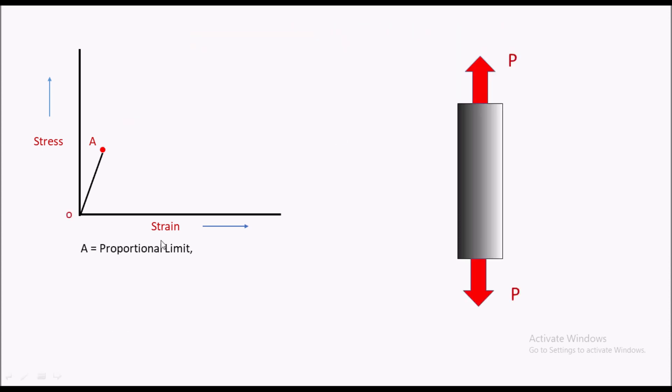So let's start the video. Here we have a mild steel specimen that is acted upon by two equal and opposite tensile loads P. The original length of this specimen was capital L. This test is basically performed on a universal testing machine, called a UTM machine.